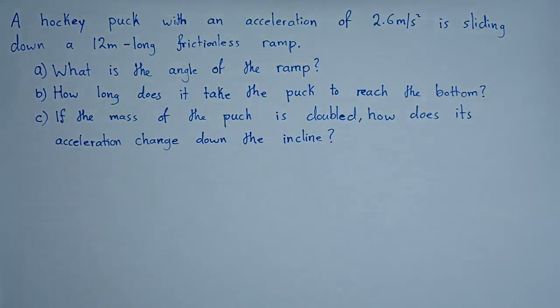A hockey puck with an acceleration of 2.6 meters per second squared is sliding down a 12 meter frictionless ramp. Okay, so the first question is asking us to find the angle of the ramp.